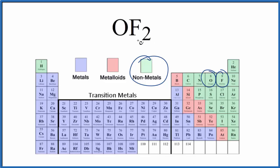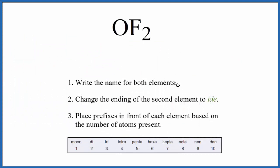That means this is a molecular or covalent compound. So when we write the formula, we need to take that into consideration. Since we have this molecular compound, first we're going to write the name for both elements. We have oxygen and then fluorine.